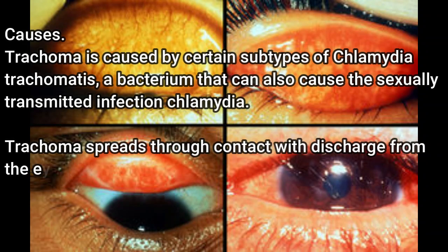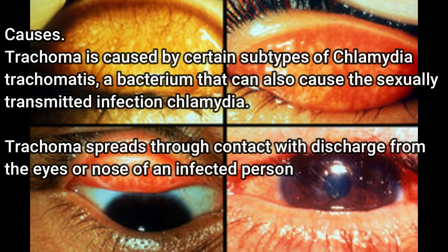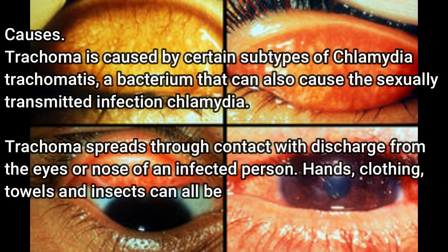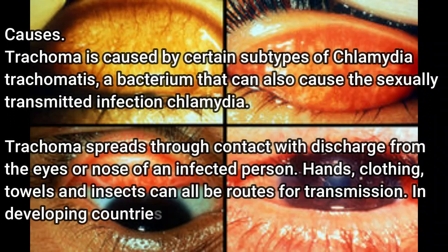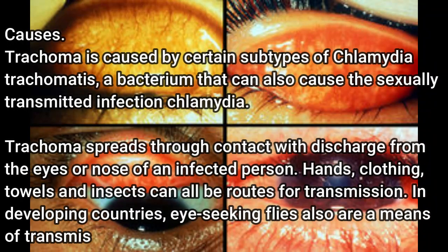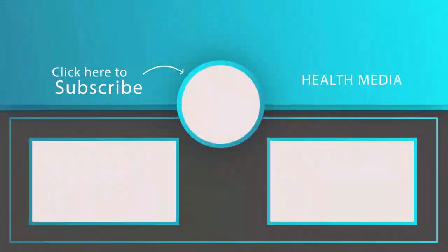Trachoma spreads through contact with discharge from the eyes or nose of an infected person. Hands, clothing, towels, and insects can all be routes for transmission. In developing countries, eye-seeking flies also are a means of transmission.